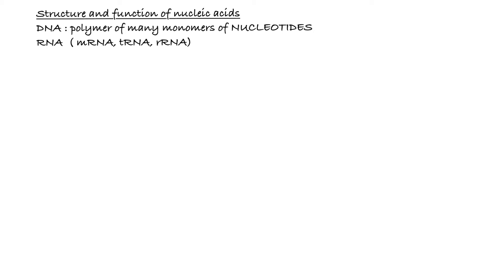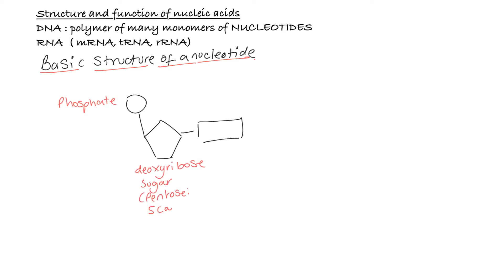The thing that makes them different is the base. There are four possible different bases for nucleotides. They can be adenine, thymine, cytosine or guanine. Here we see the basic structure of a nucleotide. We can see that the phosphate and the deoxyribose sugar are joined together by a condensation reaction. And the deoxyribose sugar is joined to the base by a condensation reaction.